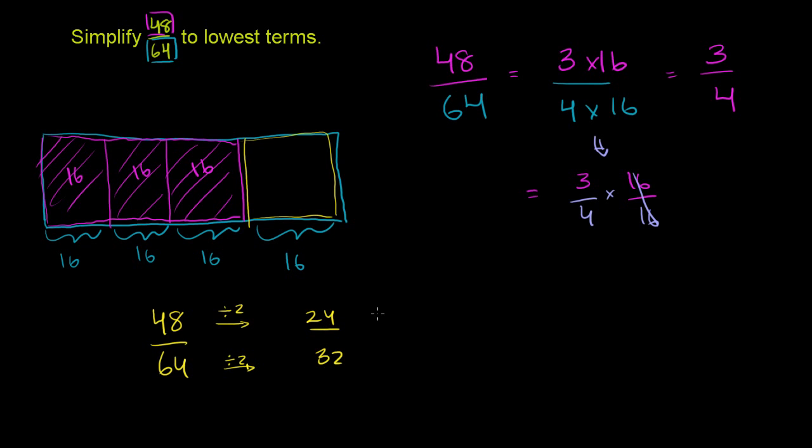So now we divide the top by 4. So we're going to divide by 4, we get 6. You have to do the same to the bottom, to the denominator. Divide by 4, you get 8. So 48 over 64 is the same thing as 24 over 32, which is the same thing as 6 eighths. And these are both divisible by 2.